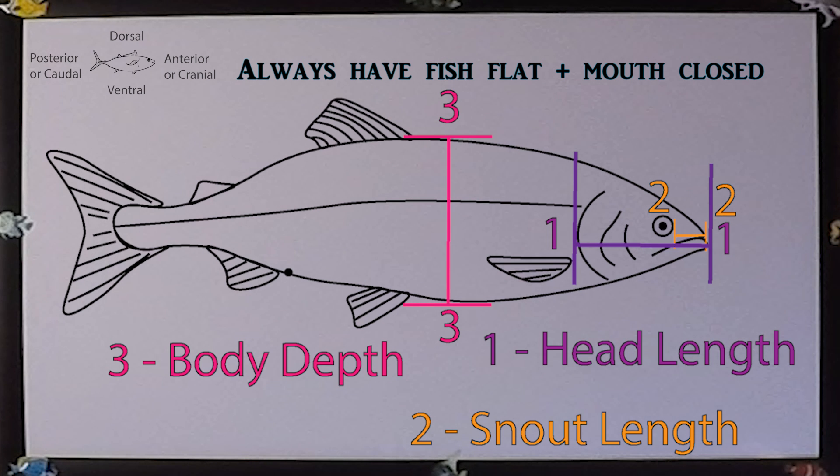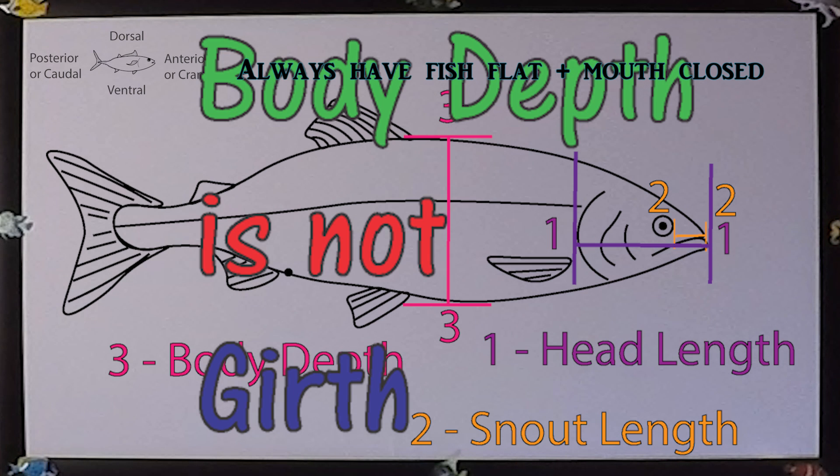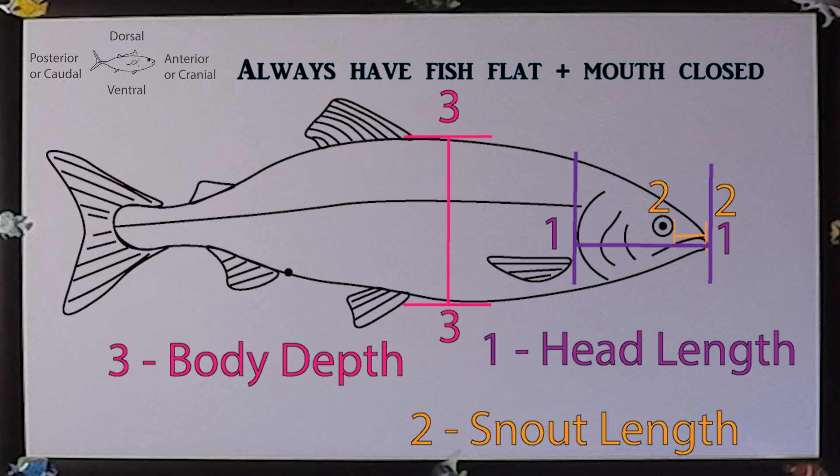Body depth. This is the maximum distance between the dorsal and ventral portions of the fish. This is a vertical measurement. Girth is different, in that you are measuring the maximum circumference around the fish, i.e. you are wrapping a contouring measuring device around the fish. Body depth is not measured with a contouring measurer.